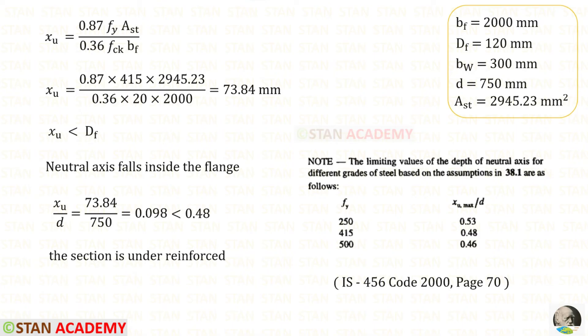Now we have to check whether the section is under reinforced or over reinforced. From page number 70 we can find XU max upon D. For 415 it is 0.48. XU upon D is 0.098 which is less than XU max upon D. In this case the section is under reinforced.